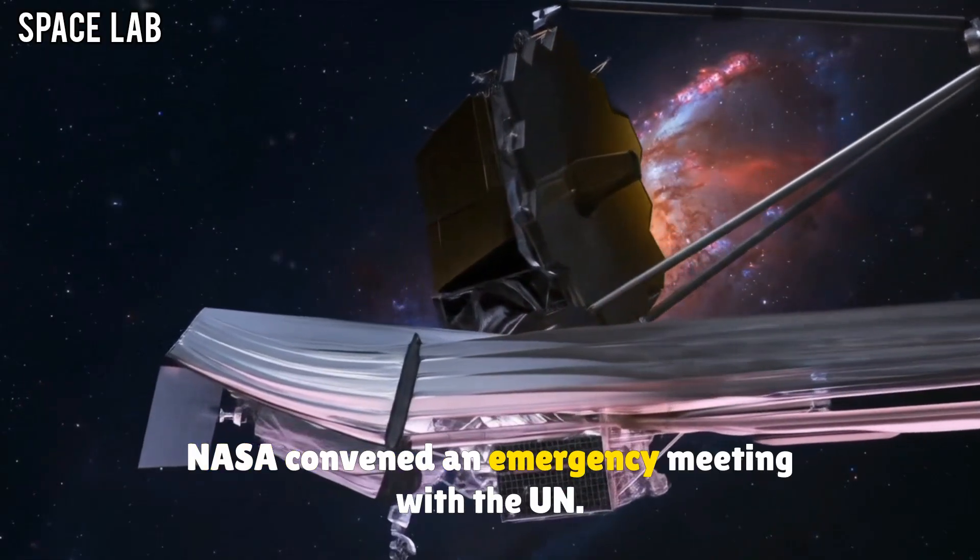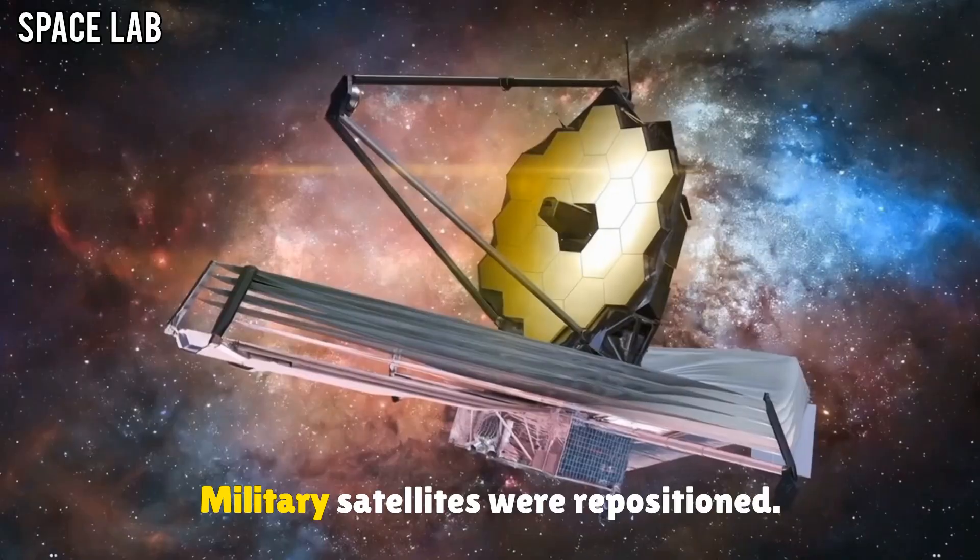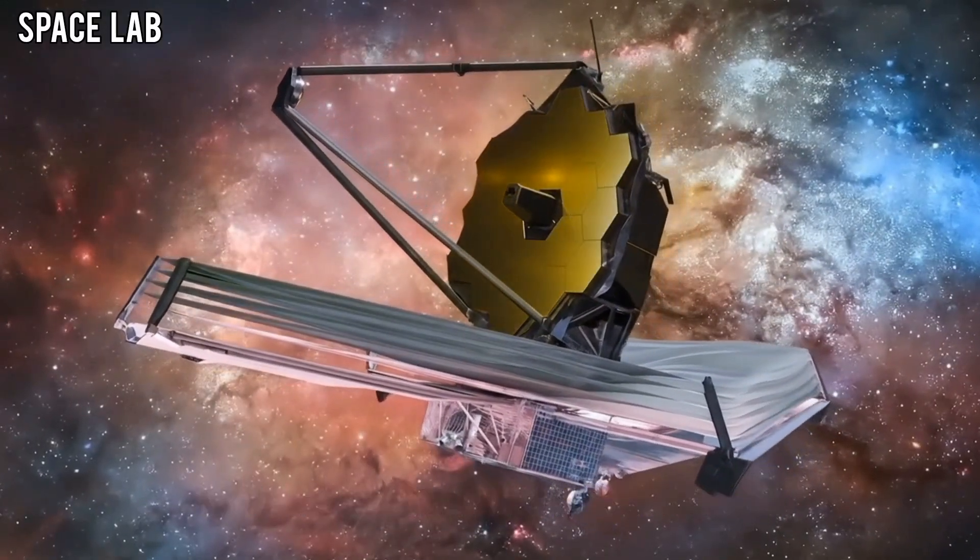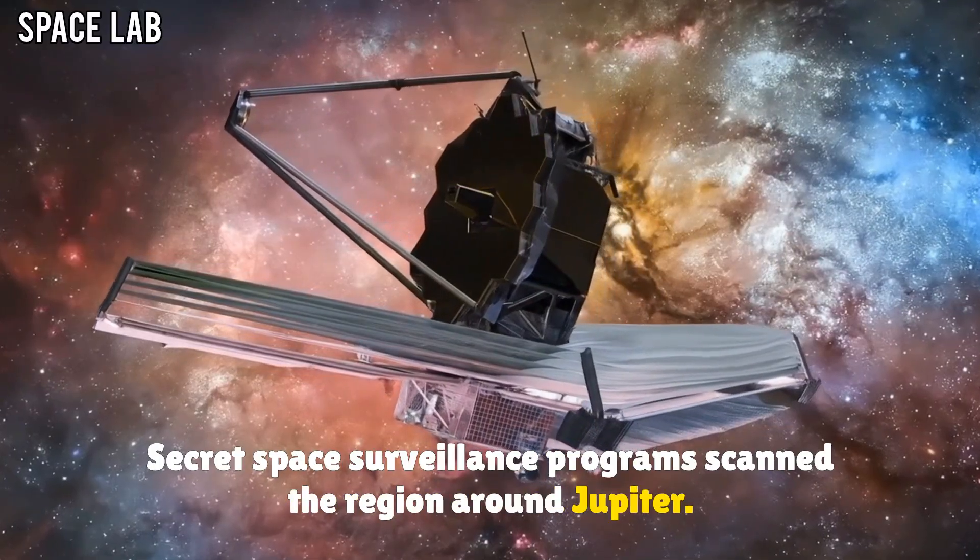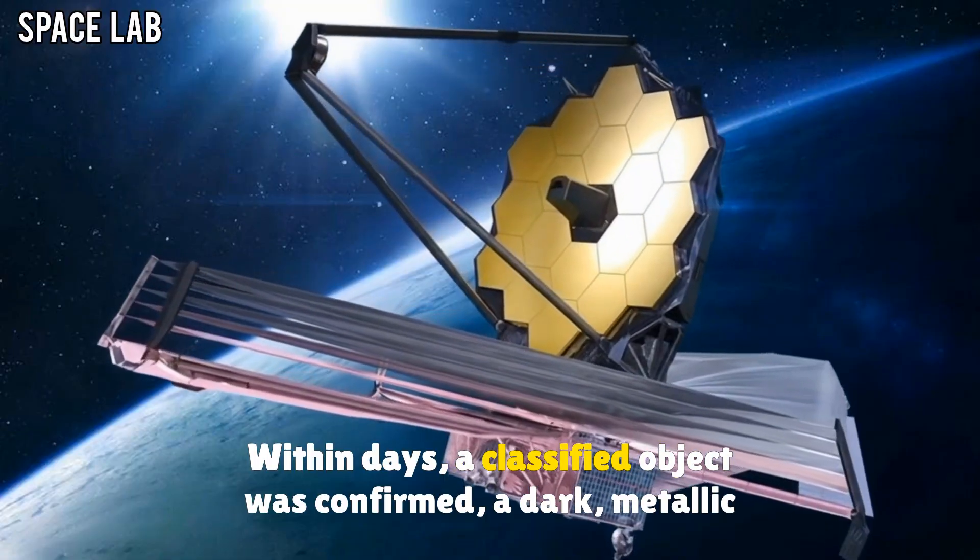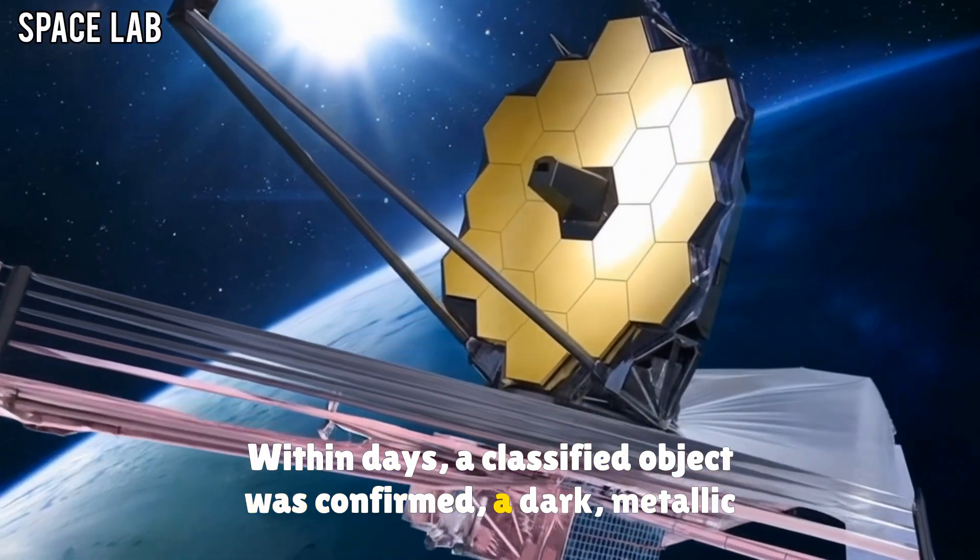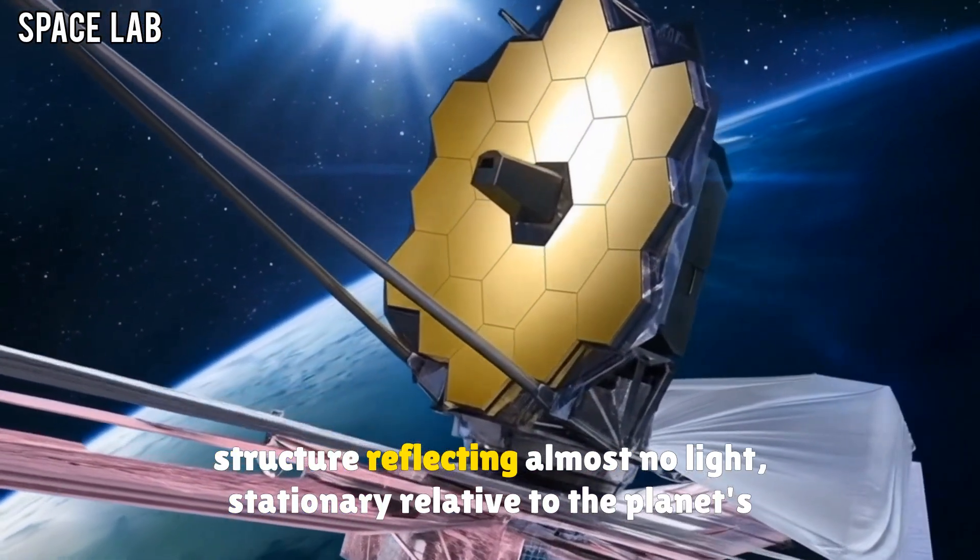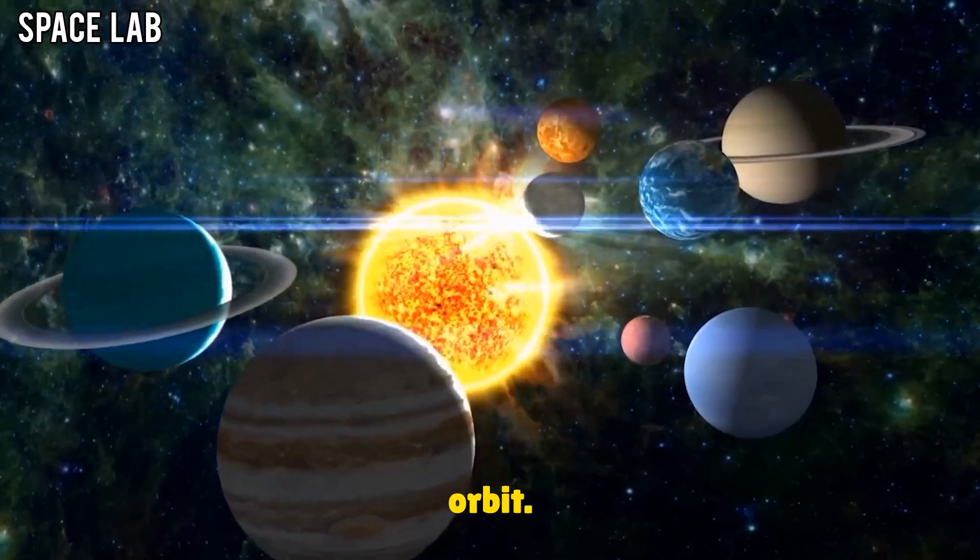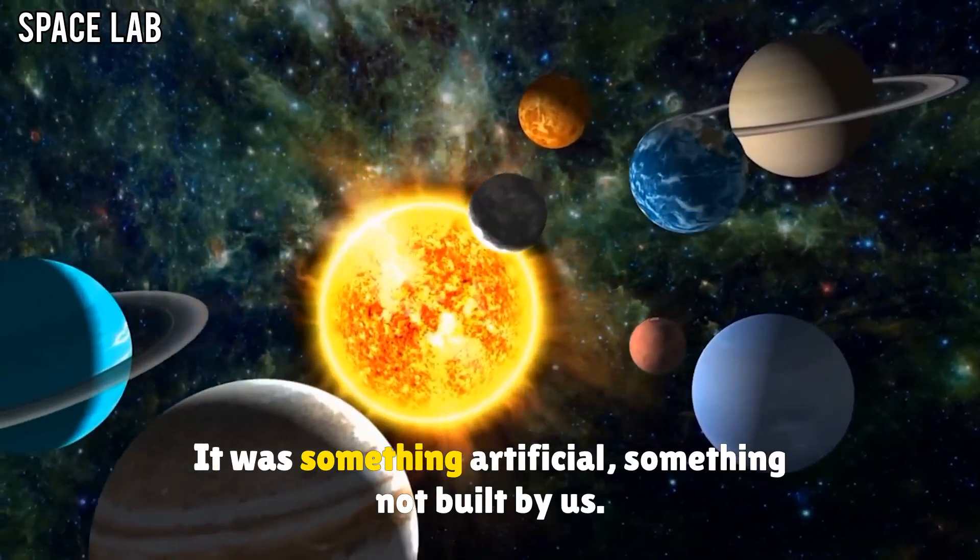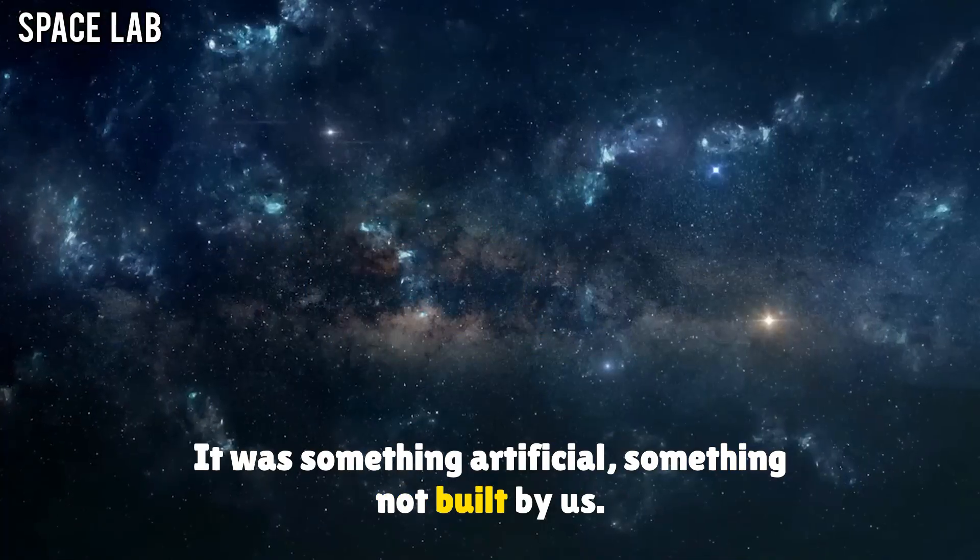NASA convened an emergency meeting with the UN. Military satellites were repositioned. Secret space surveillance programs scanned the region around Jupiter. Within days, a classified object was confirmed. A dark, metallic structure reflecting almost no light, stationary relative to the planet's orbit. It was something artificial, something not built by us.